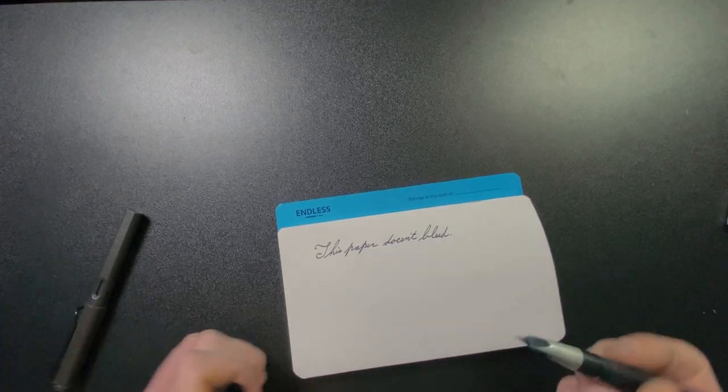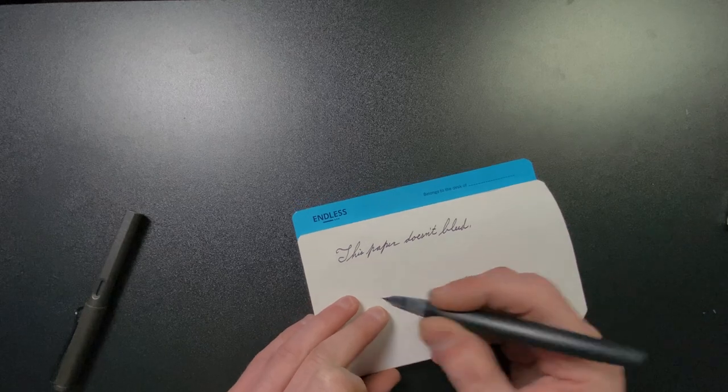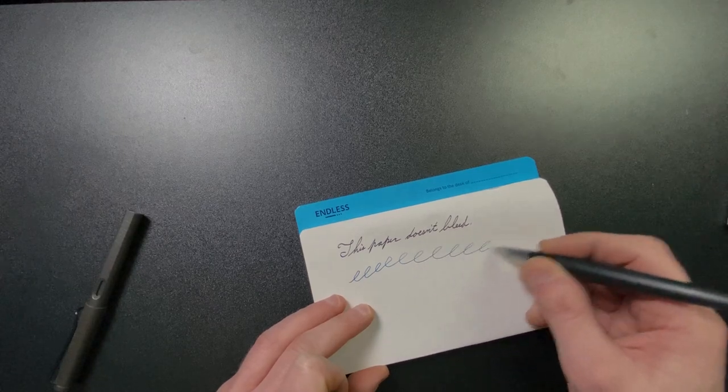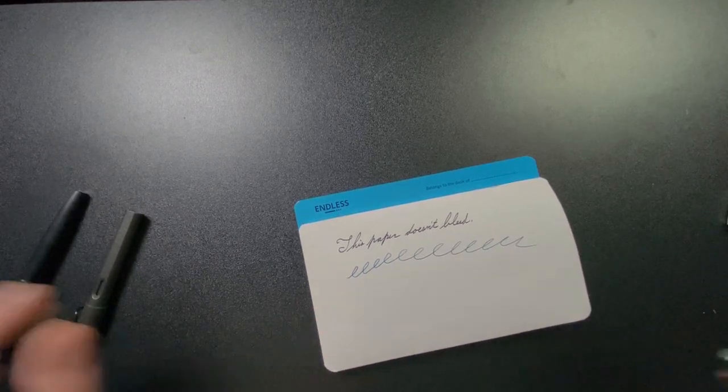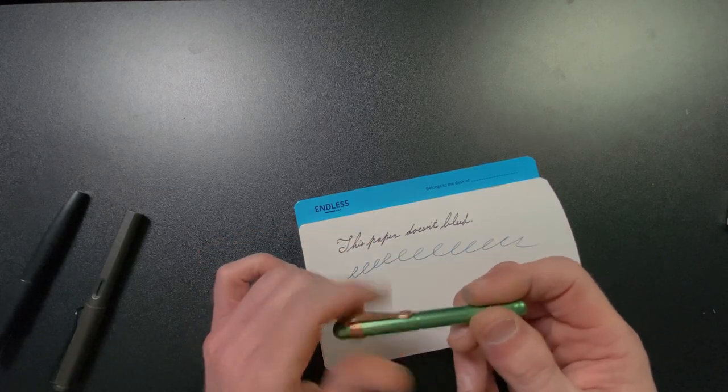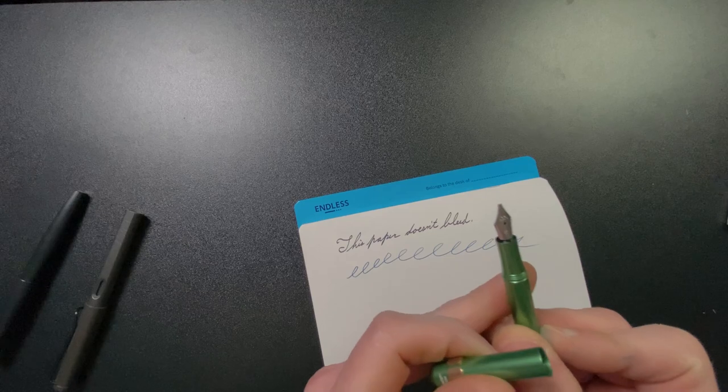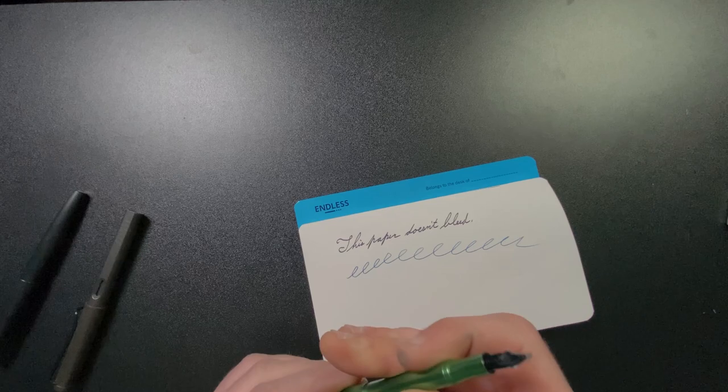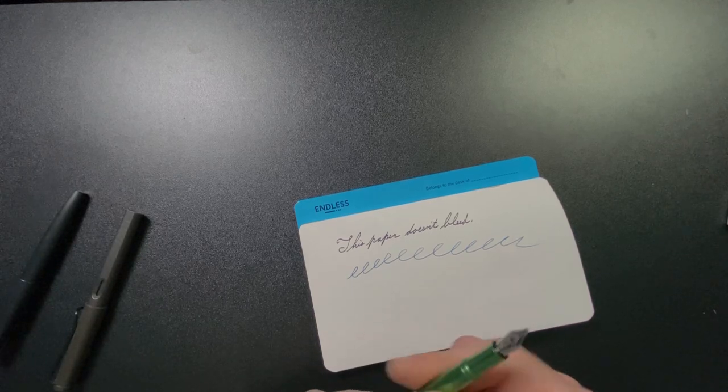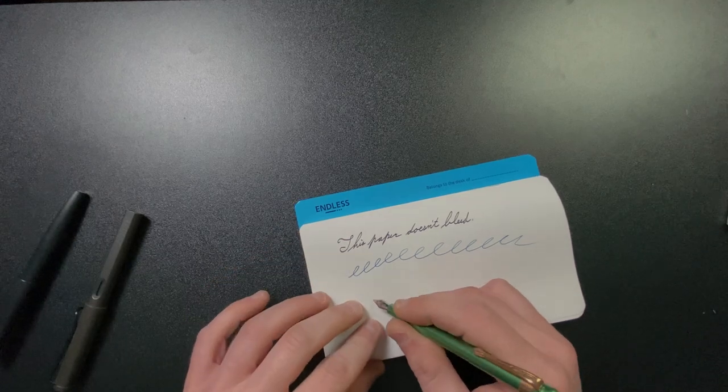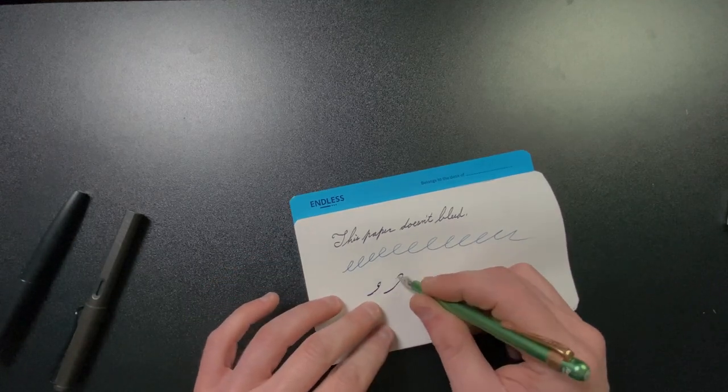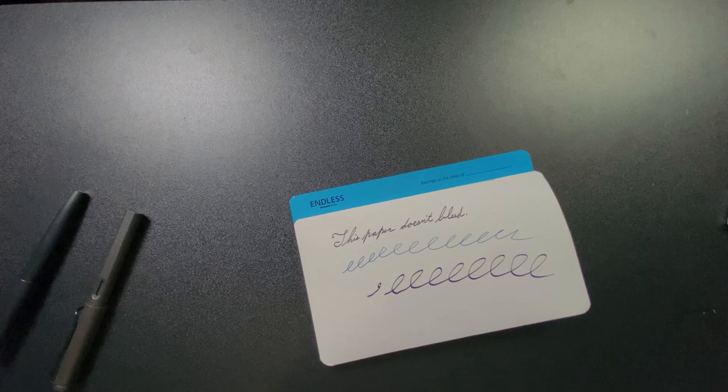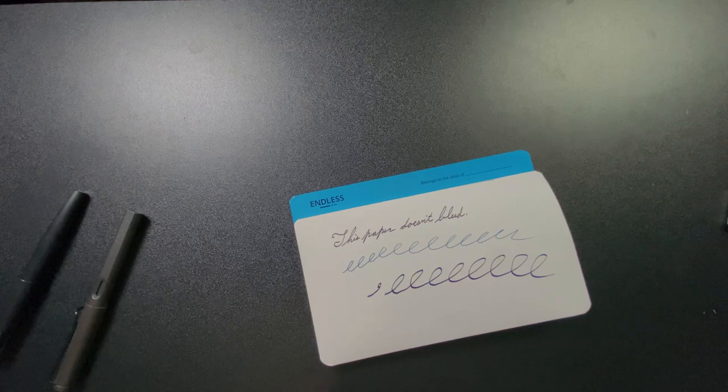We also have my Lamy 2000. This has an extra fine on it. So it's not going to make most papers bleed anyway, but just so you can see how it takes the ink. Not bad. And then I have my little Caveco Lilliput. This had a larger stub. I can't remember exactly the size, but you can see that there. Nice, robust twirls there.